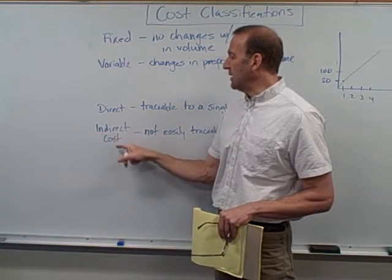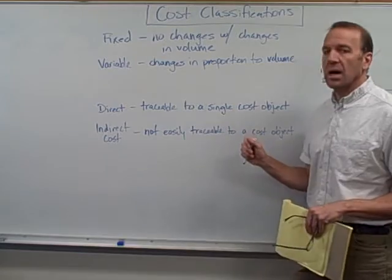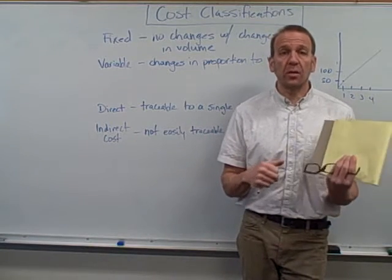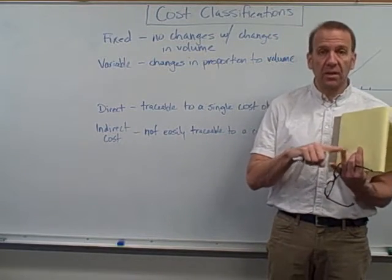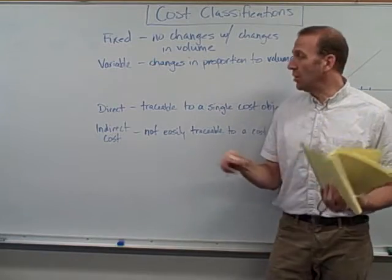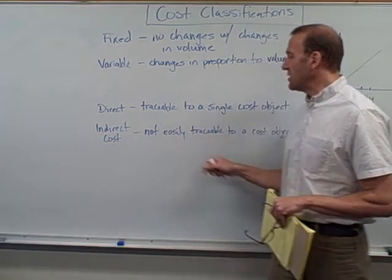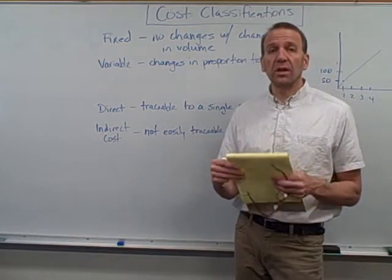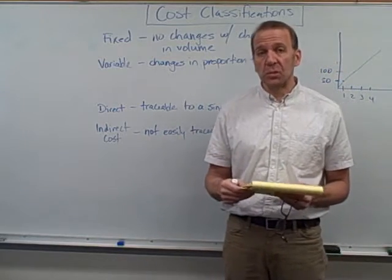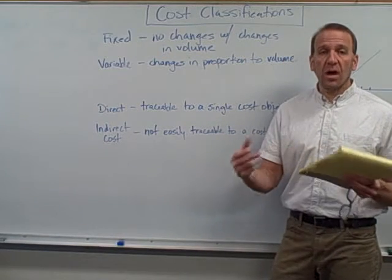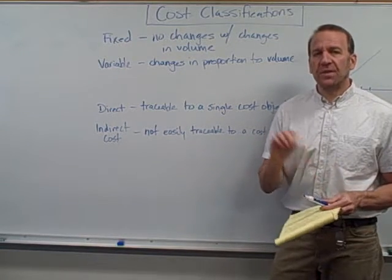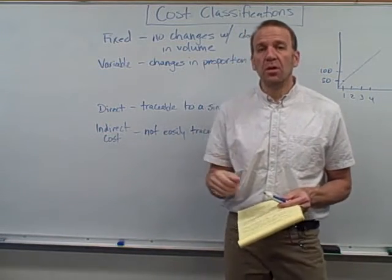Now here are some other terms — direct and indirect costs. Direct costs are traceable to a single cost object. In my example, the cost object is the table. Costs that go directly into the table are direct costs — so things like the materials, the lumber, and the labor. Indirect costs are not easily traceable to the cost object; we put them in as overhead. Such things as a supervisor's salary — that needs to go into the cost of the table, but it's very difficult to figure out exactly how much of that supervisor's time is going into the table, so we allocate it as an indirect cost.